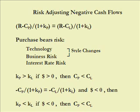This leads to something very few books address but which most students find quite important: if you are risk-adjusting positive cash flows and they are riskier, you increase the discount rate — that makes sense. But if you are risk-adjusting negative-only cash flows, such as a mandatory project, then you risk-adjust the riskier project by lowering the discount rate, which has the effect of making the cost of the less attractive option appear more expensive.